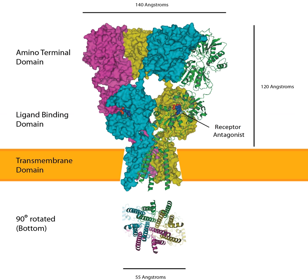GLUA-1 has four known phosphorylation sites at Serine-818, S-831, Threonine-840, and S-845. Other subunits have similar phosphorylation sites, but GLUR-1 has been the most extensively studied. S-818 is phosphorylated by protein kinase C and is necessary for long-term potentiation (LTP). S-831 is phosphorylated by CaMKII and PKC during LTP, which helps deliver GLUA-1-containing AMPAR to the synapse and increases their single-channel conductance. The T-840 site was more recently discovered. Finally, S-845 is phosphorylated by PKA, which regulates its open probability.